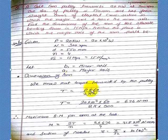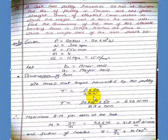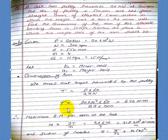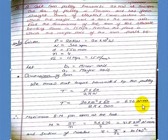We know that torque transmitted by the pulley, T is equal to P into 60 upon 2 pi n. We know the formula, power is equal to 2 pi n T upon 60, therefore T is equal to P into 60 upon 2 pi n. So we have power, we have n, we calculate torque.